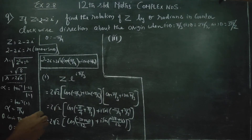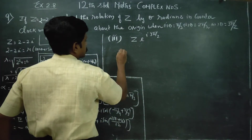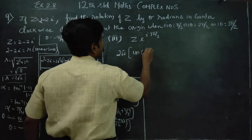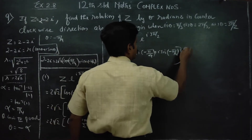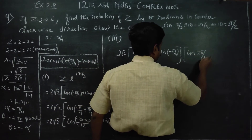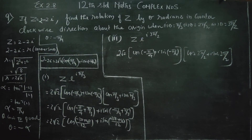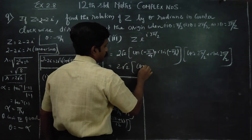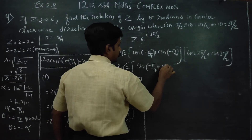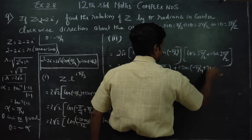Coming to the third subdivision: they are rotating about 3π/2. Therefore your answer will be z multiplied by e^(i·3π/2). My z is 2√2·cos(−π/4) + i·sin(−π/4), multiplied by cos(3π/2) + i·sin(3π/2). Multiplication of complex numbers in polar form — you just add the arguments. Therefore your answer will be 2√2·cos(−π/4 + 3π/2) + i·sin(−π/4 + 3π/2).